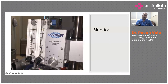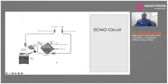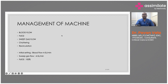There is a blender to achieve gas flows and set the FDO2. Putting all these elements together, the basic circuit is: blood comes from the patient, goes through the centrifugal pump, then through the oxygenator, and returns back to the patient.